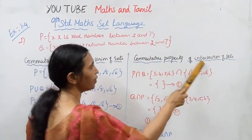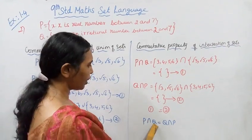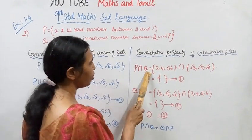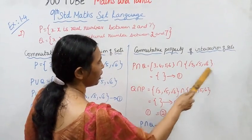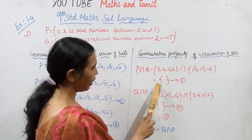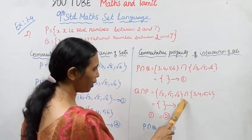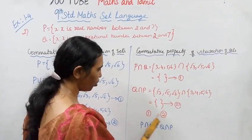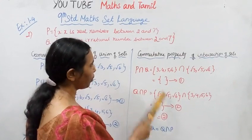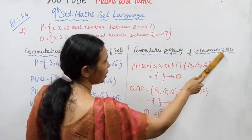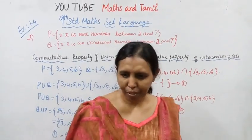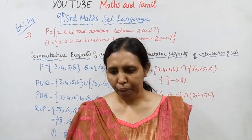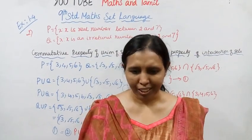That is the commutative property of intersection. P intersection Q equals Q intersection P. P intersection Q: P is {3,4,5,6} and Q is {√3,√5,√6} — there are no common elements, so P intersection Q is the null set. Similarly, Q intersection P is also the null set. Therefore P intersection Q equals Q intersection P — the commutative property of intersection of sets is verified.